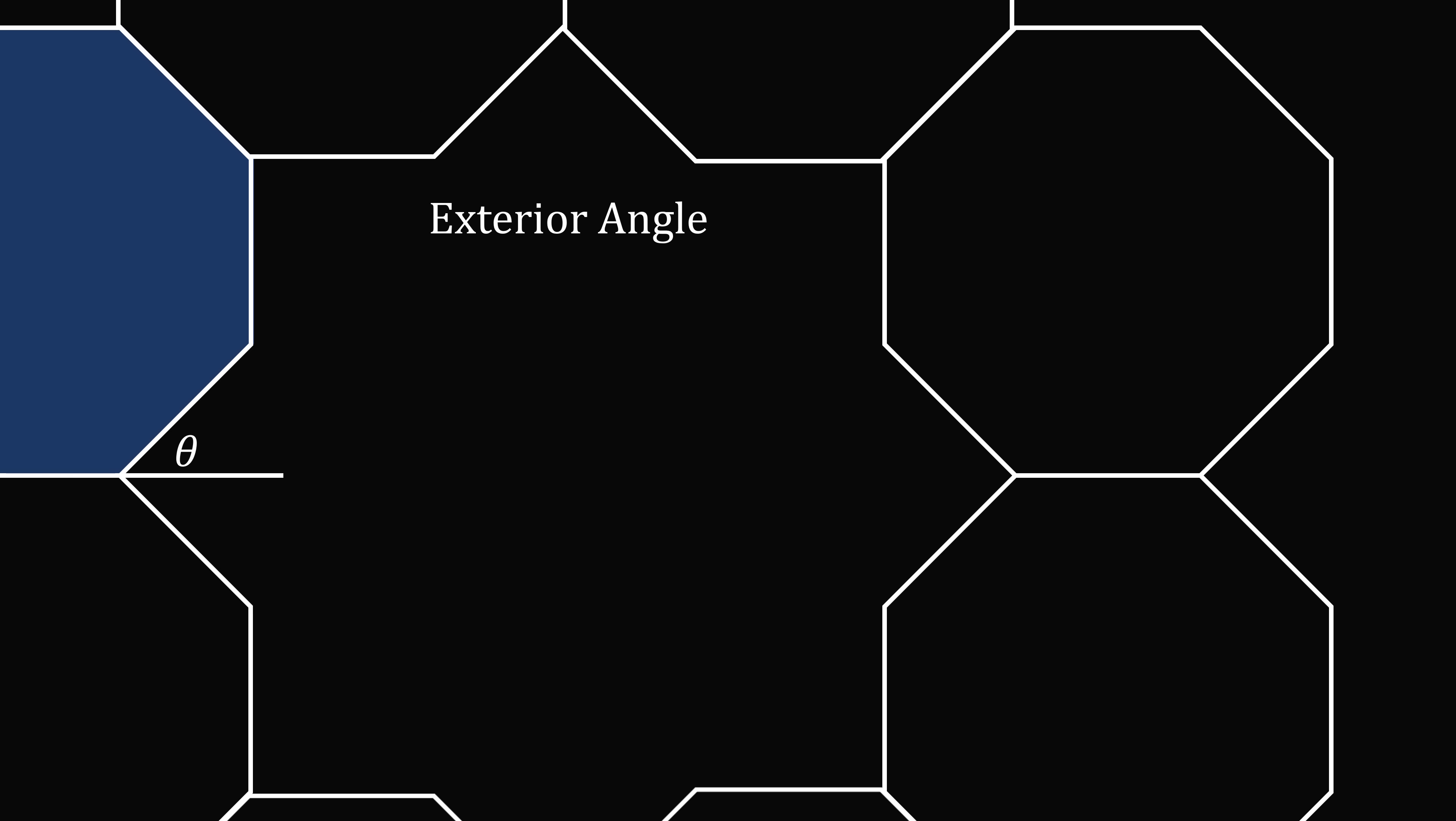The formula for an exterior angle of a regular polygon is that the exterior angle is equal to 360 degrees divided by n, where n is the number of sides. In this case, we have an octagon which has eight sides. So theta is equal to 360 degrees divided by 8, which is equal to 45 degrees.